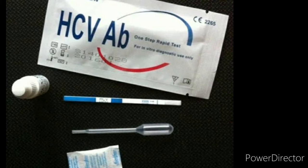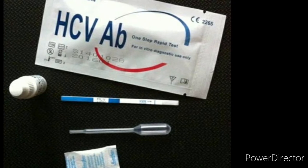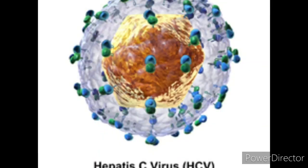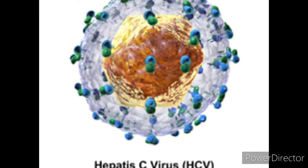Hepatitis D is called a defective virus because it needs Hepatitis B for replication — without Hepatitis B it cannot replicate. Hepatitis E is called indirectly transmitted hepatitis. Hepatitis G virus does not have a well-known common name.